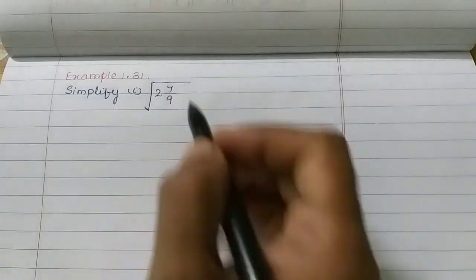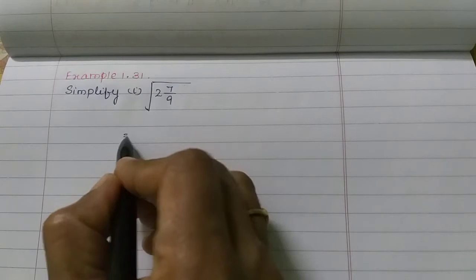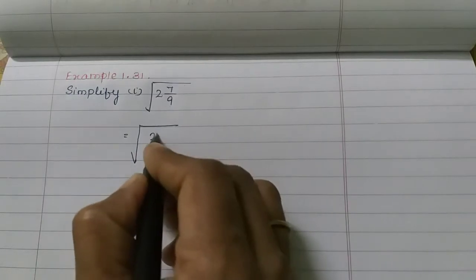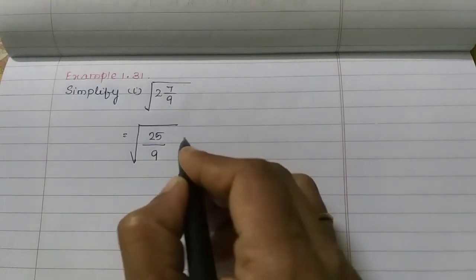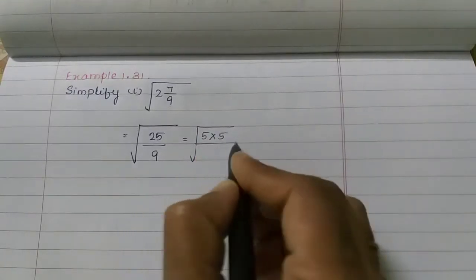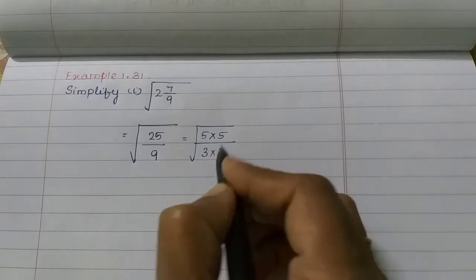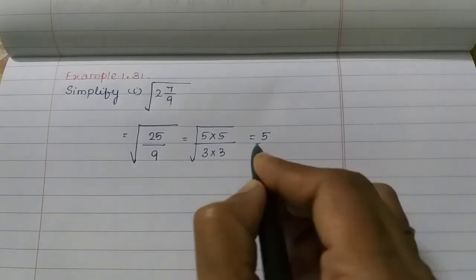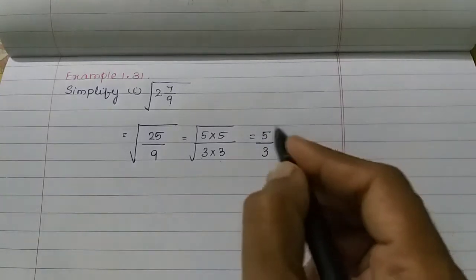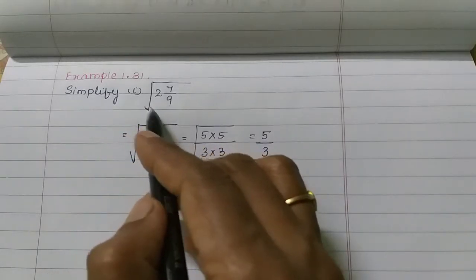The next example is Example 1.31: simplify the root of 2 and 7/9. This is the first subdivision. This is a mixed fraction. 2 nines are 18, 18 plus 7 is 25, so we get 25 by 9. Now 25 is 5 times 5, and 9 is 3 times 3.